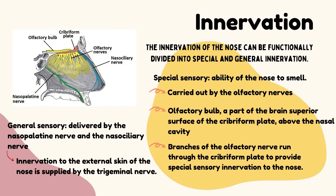The innervation of the nose is divided into special and general innervation. Special innervation refers to the ability to smell, carried out by the olfactory nerves. The olfactory bulb lies on the superior surface of the cribriform plate above the nasal cavity. Branches of the olfactory nerve run through the cribriform plate to provide special sensory innervation. General sensory innervation to the septum and lateral walls is delivered by the nasopalatine nerve and nasociliary nerve. Innervation to the external skin of the nose is supplied by the trigeminal nerve.